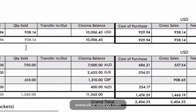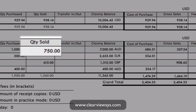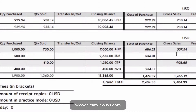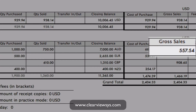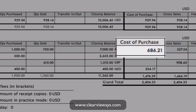If we come down to our foreign currencies, you'll see that 750 Australian dollars were sold, which is equivalent to $557.54 in US dollars — our home currency. So that's our gross sales in our home currency.